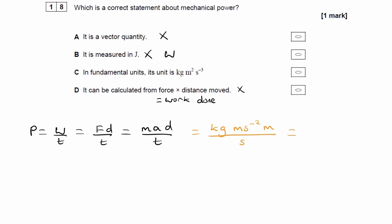And this then gives us kilograms meters squared, and these two become s to the minus three. And that would be C.